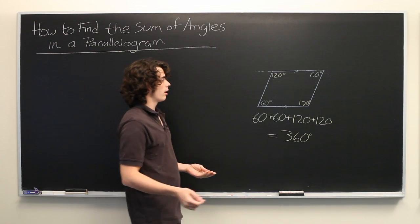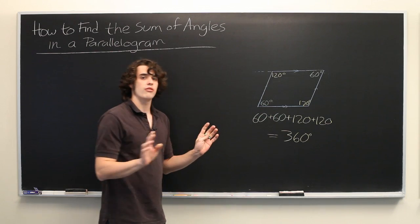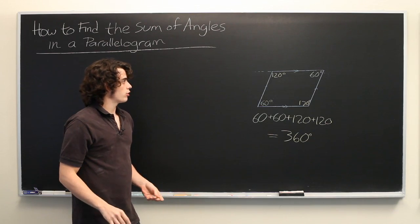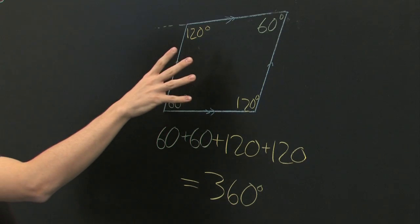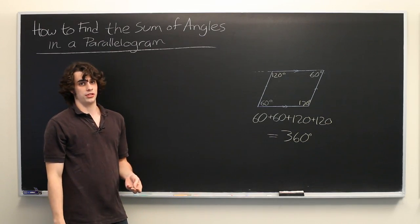So anytime you're given one of the interior angles of a quadrilateral, it doesn't even matter if it's a rhombus, trapezoid, or square. As long as it has four sides, the sum of the interior angles will always be 360 degrees.